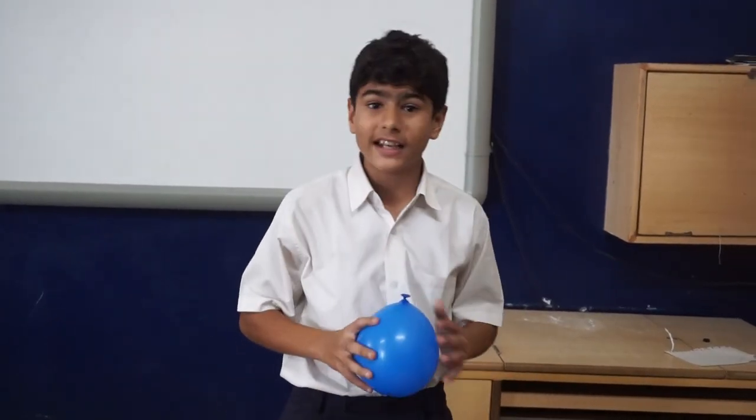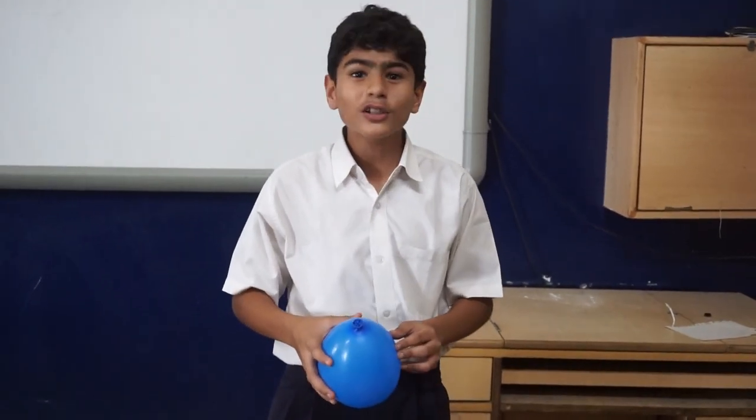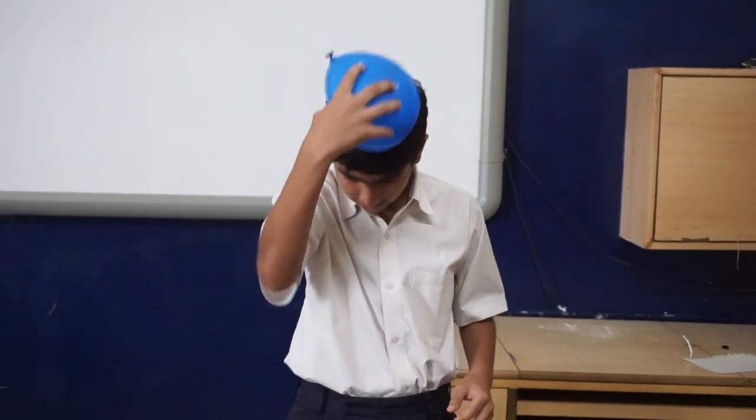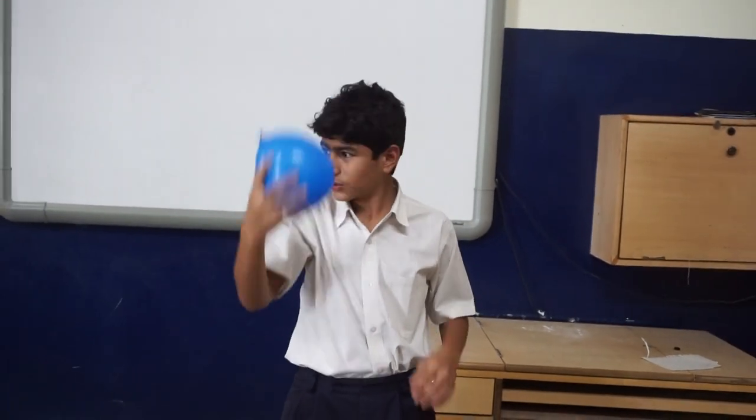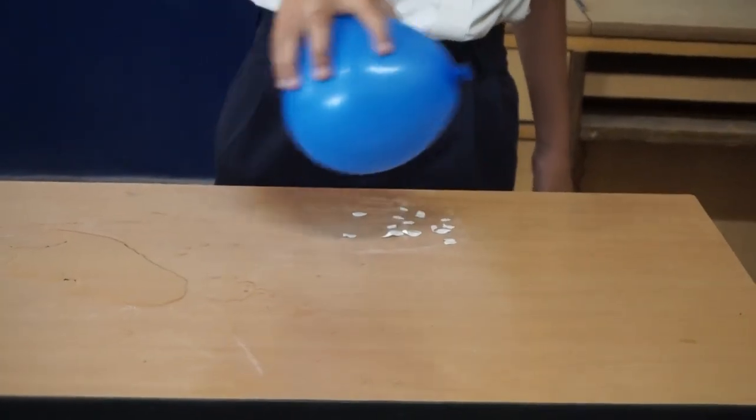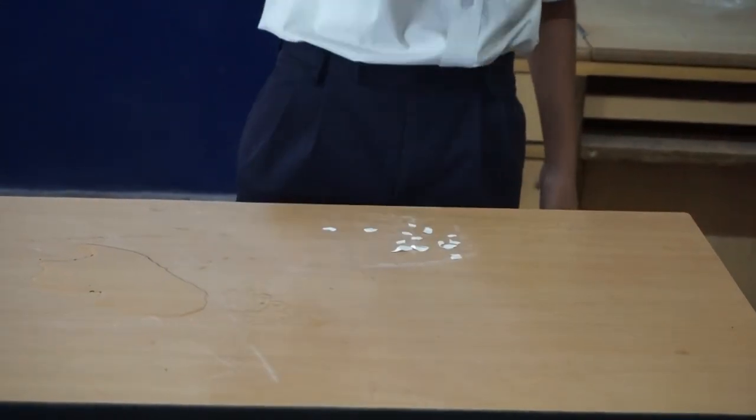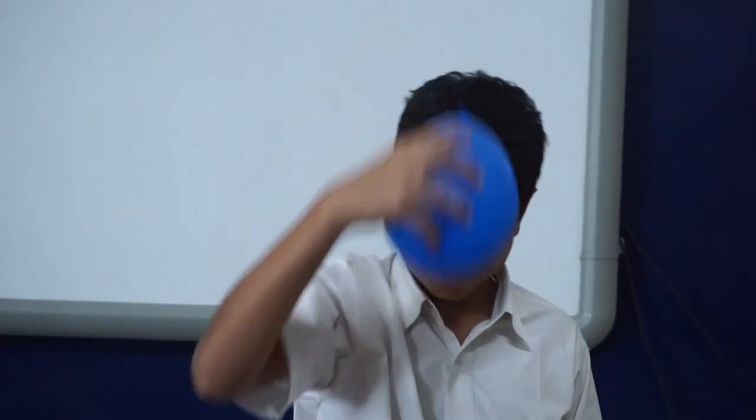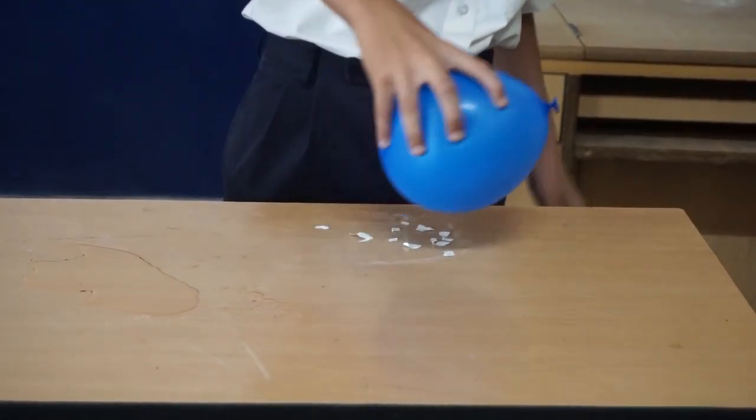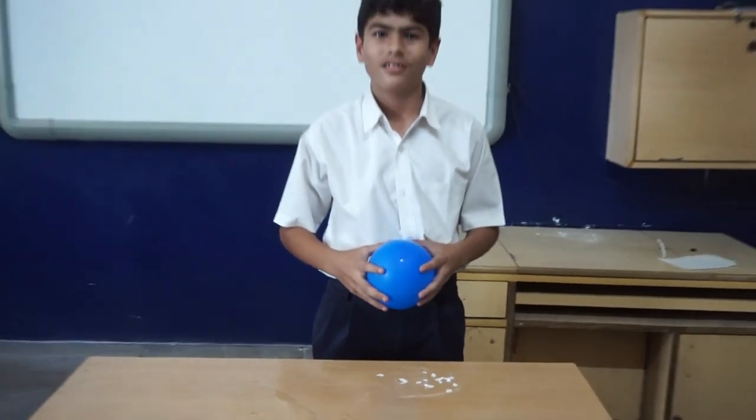And then, when I take it near to the paper bits, the paper bits will get attracted to the balloon. So, let us see it. And let us see how it works. So, I am rubbing it. Now, we take it to the paper and rub it to the balloon. See, as we see, this paper bit is getting attracted to the balloon. See, as we see, many paper bits are getting attracted to the balloon, which shows the presence of electrostatic force on the balloon. Thank you.